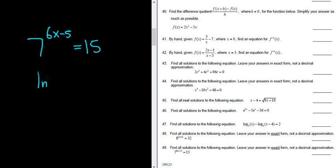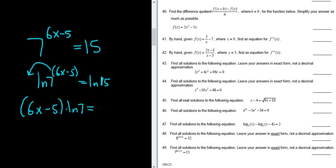So we'll take the natural log of the left-hand side, and that's equal to the natural log of the right-hand side. The reason we do this is because now this entire piece here is in the exponent, and so you can put it in the front via the power rule for logs. So this becomes (6x minus 5) times the natural log of 7 equals the natural log of 15.